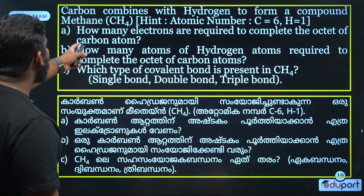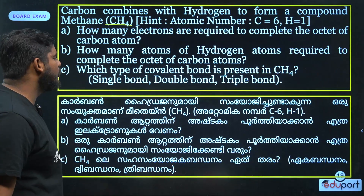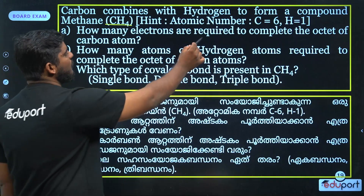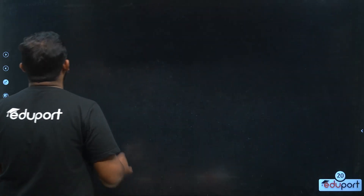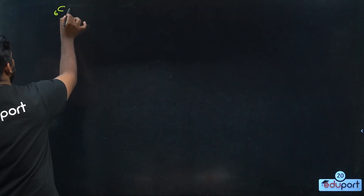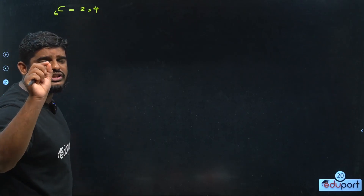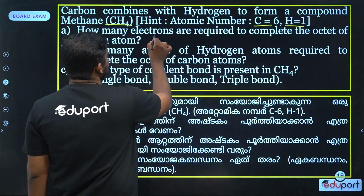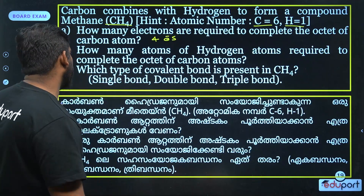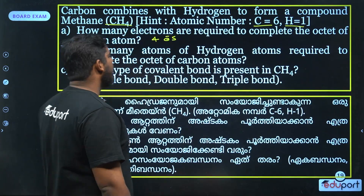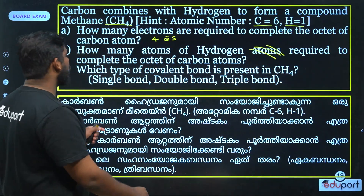Next question: carbon combines with hydrogen to form compound CH4. Carbon and hydrogen form CH4, which is methane. The atomic number of carbon is 6 and hydrogen is 1. How many electrons are required to complete the octet of the carbon atom? Carbon atomic number is 6, so its configuration is 2, 4.